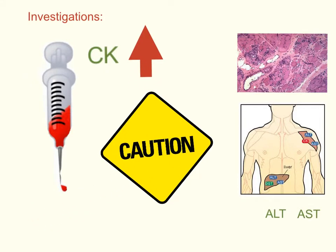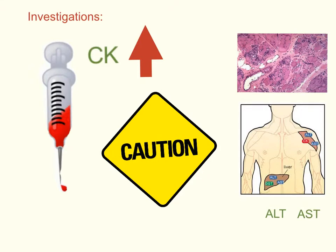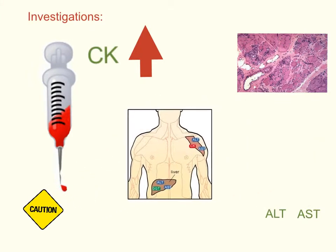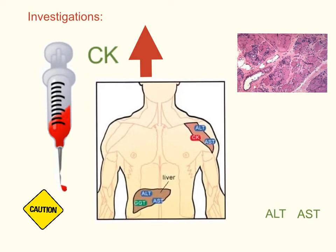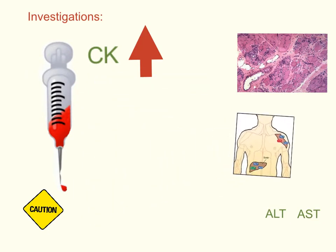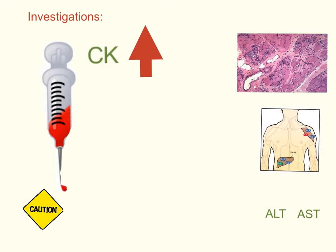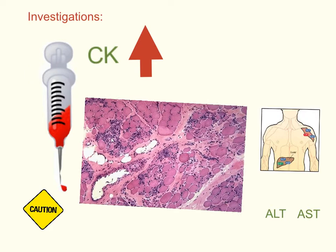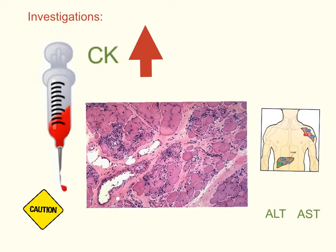A word of caution: AST and ALT are released from muscle breakdown, and on routine blood tests, especially liver function tests, the elevated AST and ALT may be misleading toward liver disease. A careful clinical exam by pediatricians to evaluate for muscle weakness may prevent unnecessary liver testing. If a muscle biopsy is performed, it will show muscle degeneration, necrosis, and increased connective tissue, as shown in this pathology example.